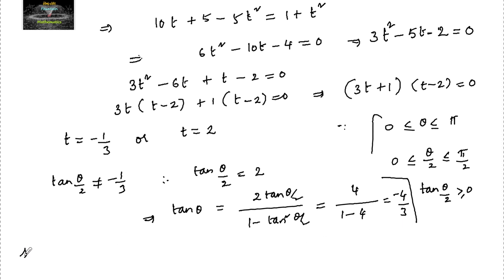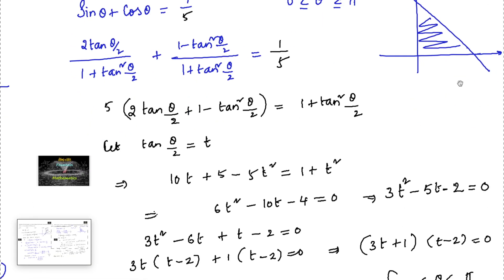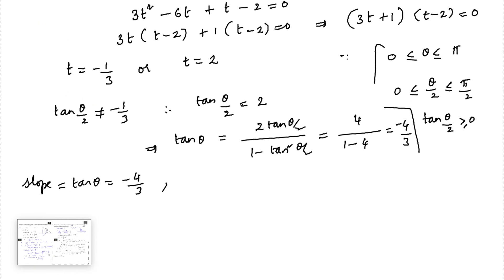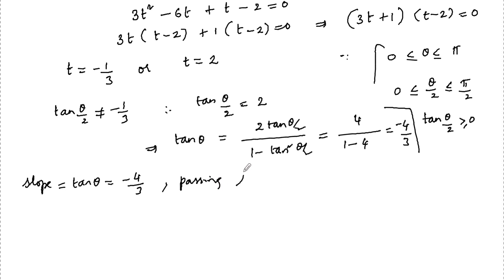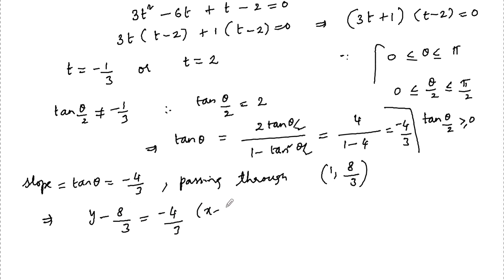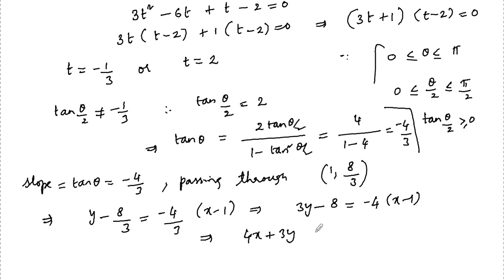The slope is tan θ = −4/3 and the line passes through the point (1, 8/3). Using the point-slope form y − y₁ = m(x − x₁), we get 3y − 8 = −4(x − 1), which gives 4x + 3y = 12.